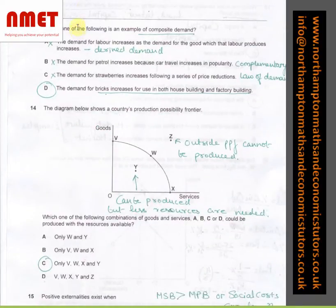In question number 13, which one of the following is an example of composite demand? Again, I have used process of elimination where I've said A is derived demand, B is complementary and C is the law of demand. Now, D, the demand for bricks increases for use in both house building and factory building is composite demand and hence it is the answer.